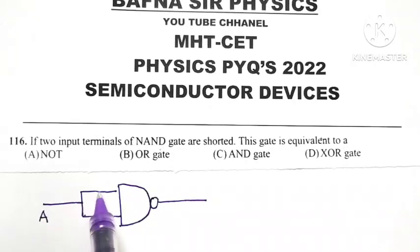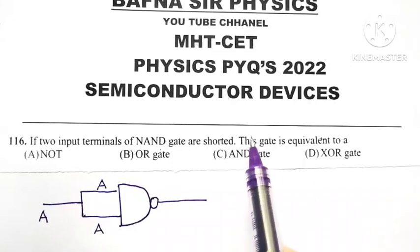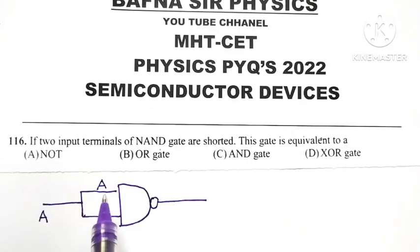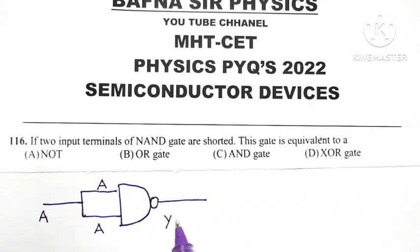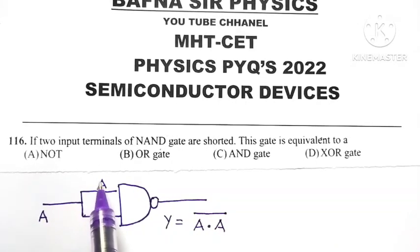It means this input is also A, second input is also A. This gate is equivalent to, when inputs of NAND gate are shorted, we know what is the output of NAND gate. It is a logical ANDing of its two inputs and its whole complement: A into A, whole complement.